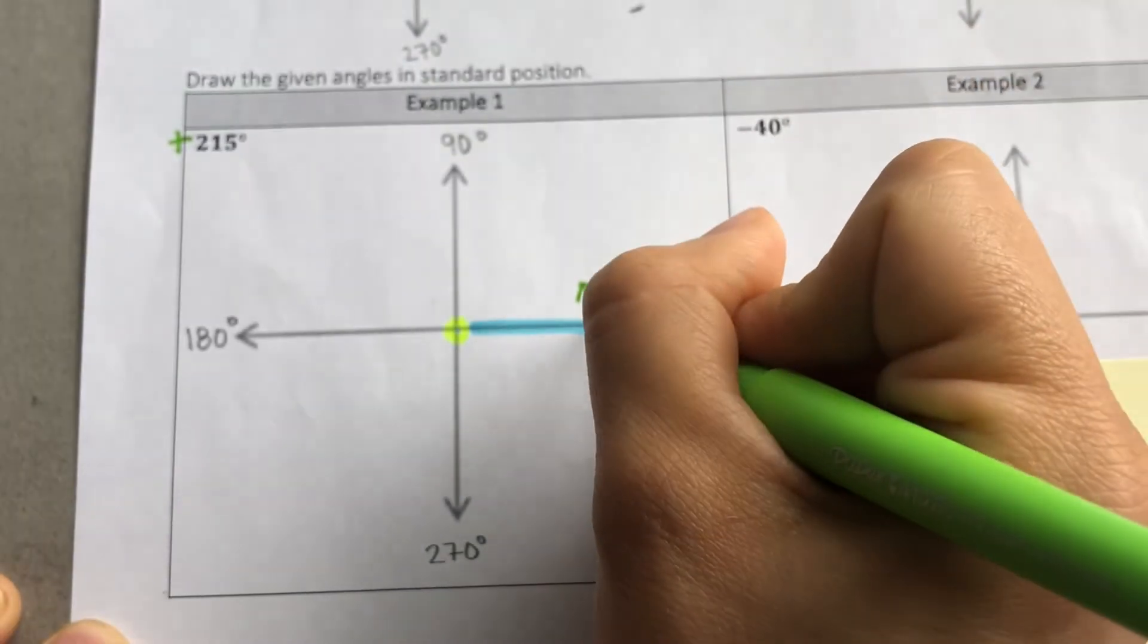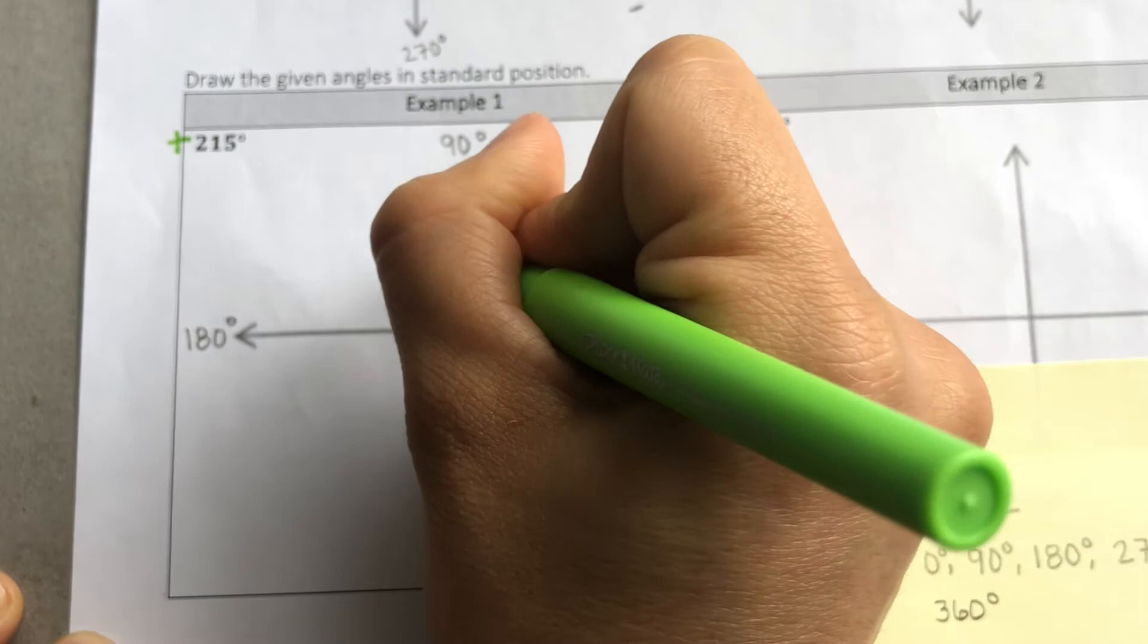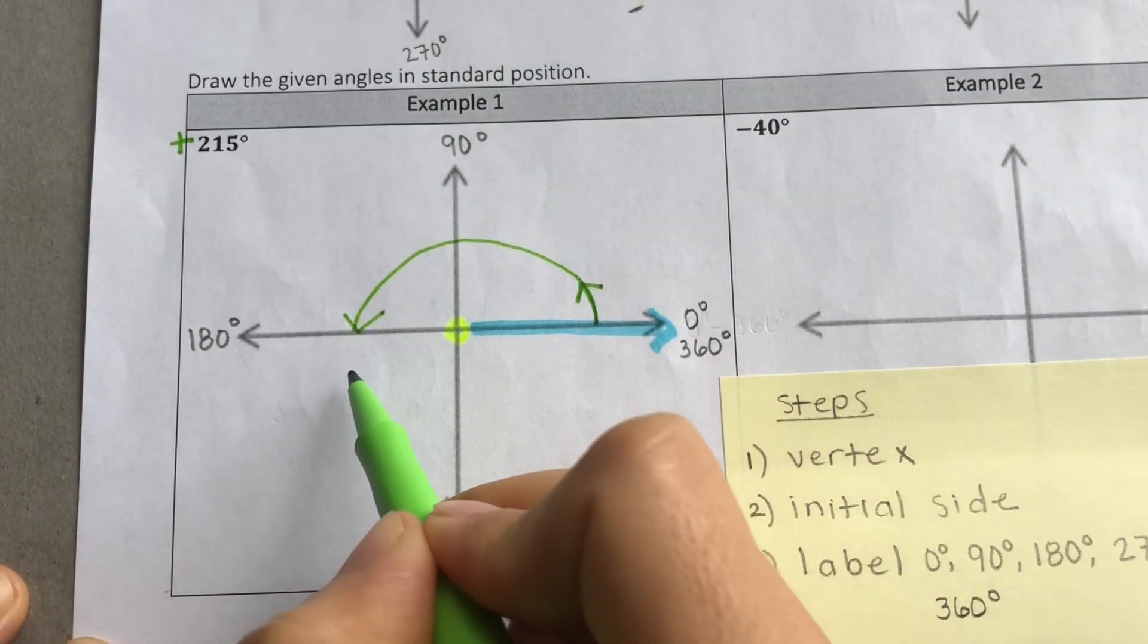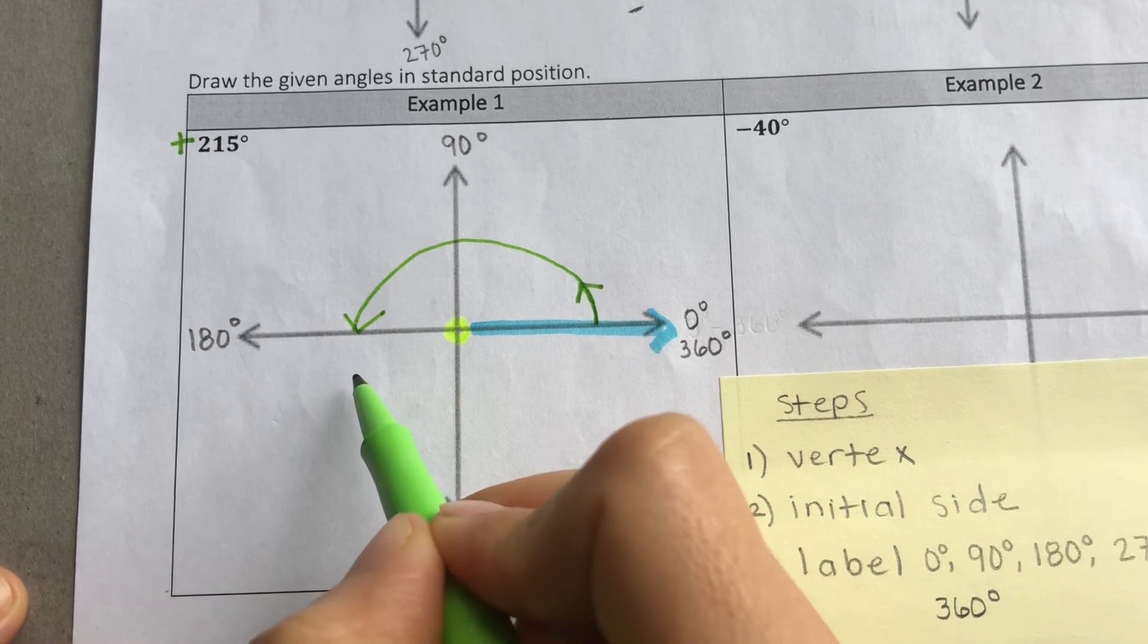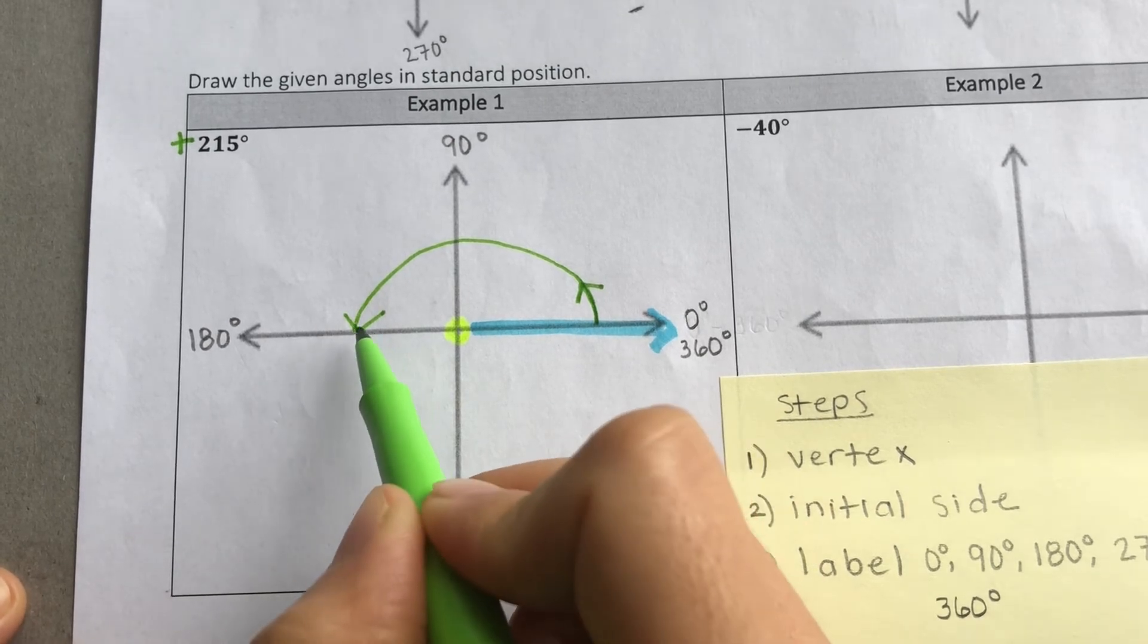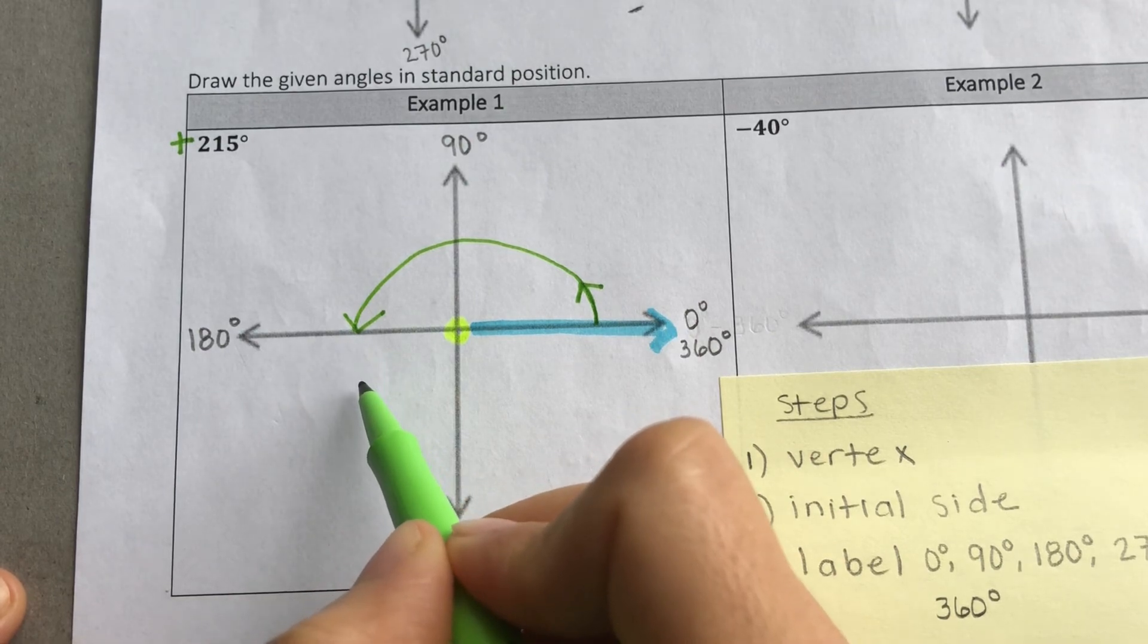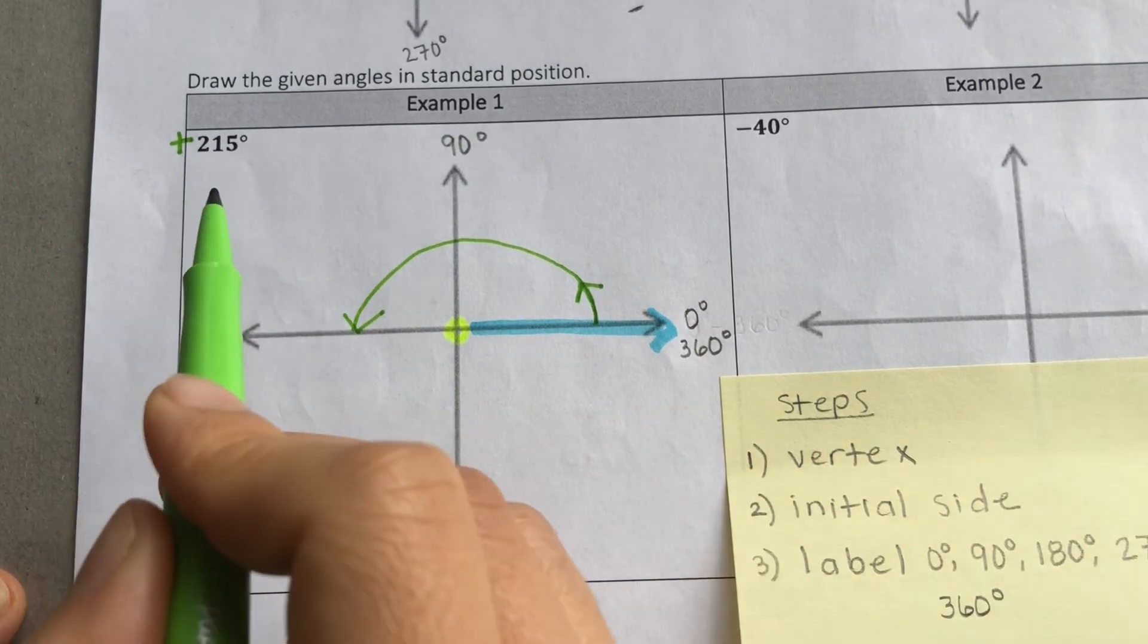Okay, so for sure, we're going to go all the way to 180. But we're not going to stop here, we still have to go a few degrees more. So if we're at 180, how many more degrees should we keep going to get to 215?